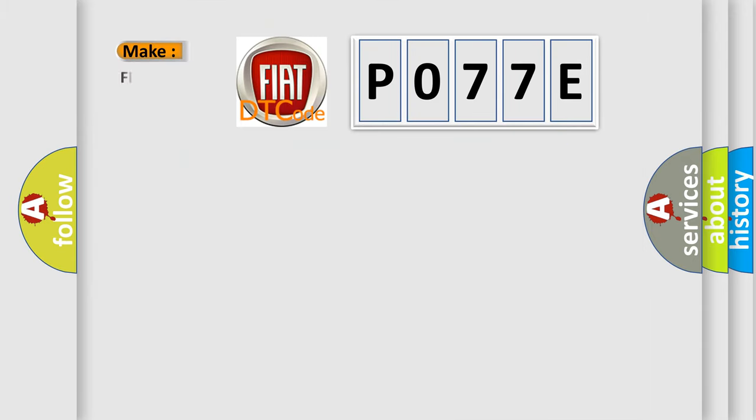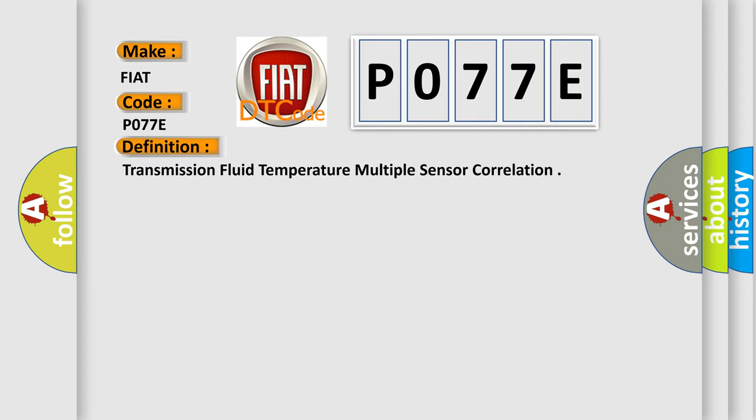So, what does the diagnostic trouble code P077E interpret specifically for Fiat car manufacturers? The basic definition is: transmission fluid temperature multiple sensor correlation.